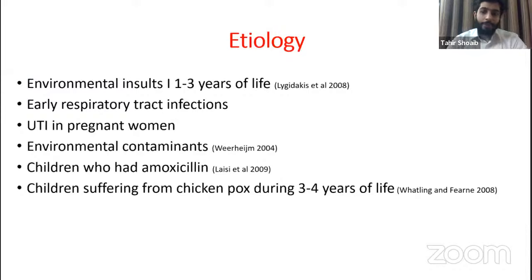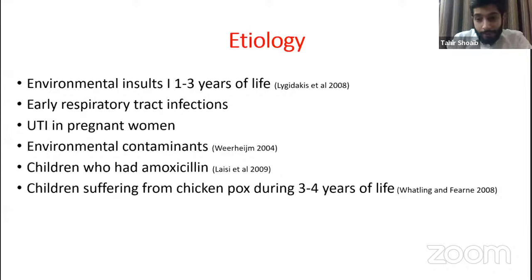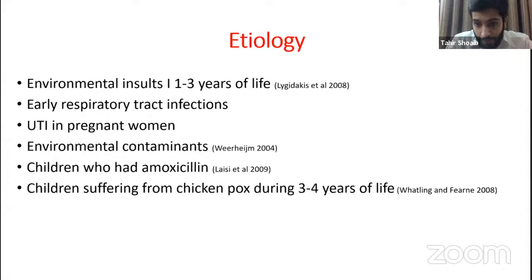Moving on to the etiology. This is the question I get asked most by the parents: Doctor, why did my child get this? To be honest, we don't have any distinct evidence that points towards one or two main causal factors. What we do know is that it's most commonly seen in children who had illness during the first few years of their life, especially close to birth. Having said that, we still see a number of cases where children have MIH with no distinct medical history. What I normally ask parents is whether they had any complications during the third trimester or if the child was sick during the first years of life. But to be honest, we still don't have one answer regarding etiology — these are all hypotheses published in the literature.